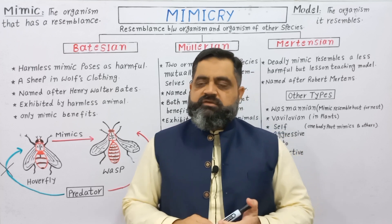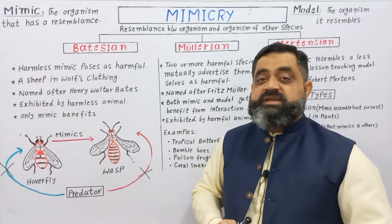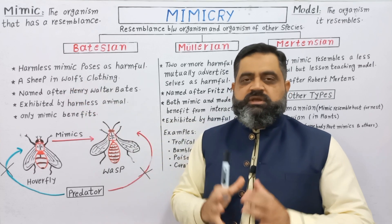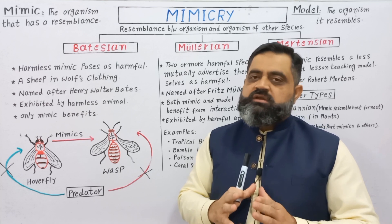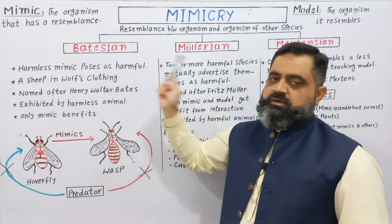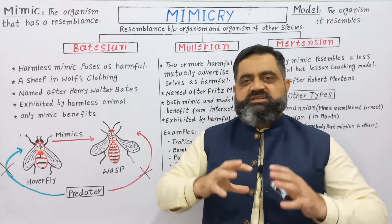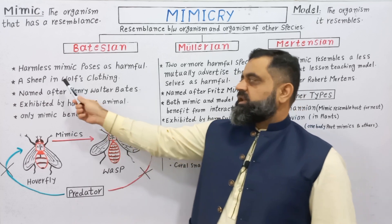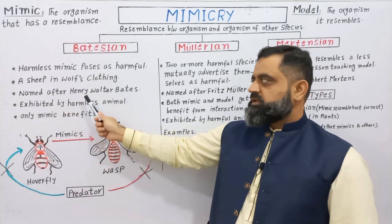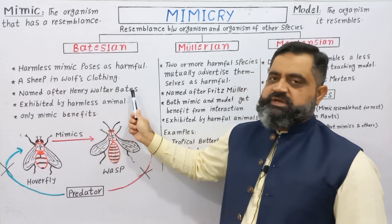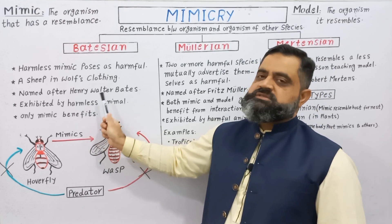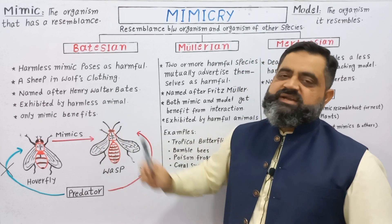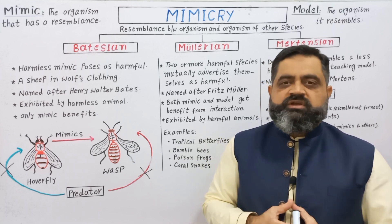The first type we are going to discuss is Batesian Mimicry. In Batesian Mimicry, a harmless mimic — an animal belonging to a species that is very harmless — adopts such a physical appearance that it looks like a very harmful animal, like a sheep in wolf's clothing. This mimicry has been named after Henry Walter Bates and is exhibited by harmless animals. In this mimicry, only the mimic gets benefit, while the model does not have any kind of benefit or loss.